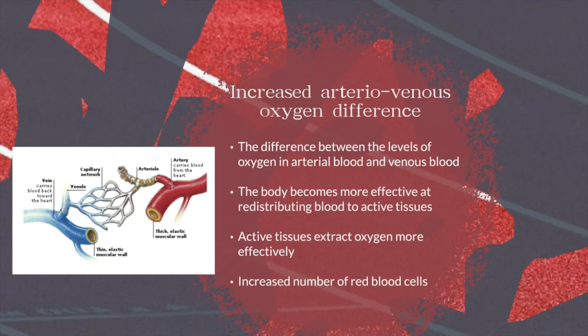This increased arteriovenous oxygen difference is also a result of an increased number of red blood cells. As red blood cells increase, the amount of oxygen we can transport around the body also increases, therefore there's a bigger difference between arterial blood and venous blood.